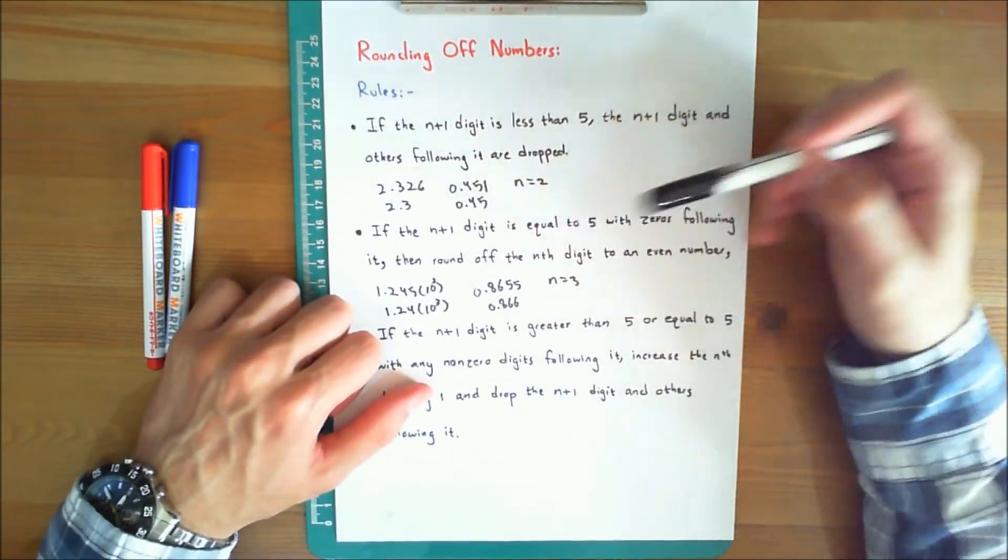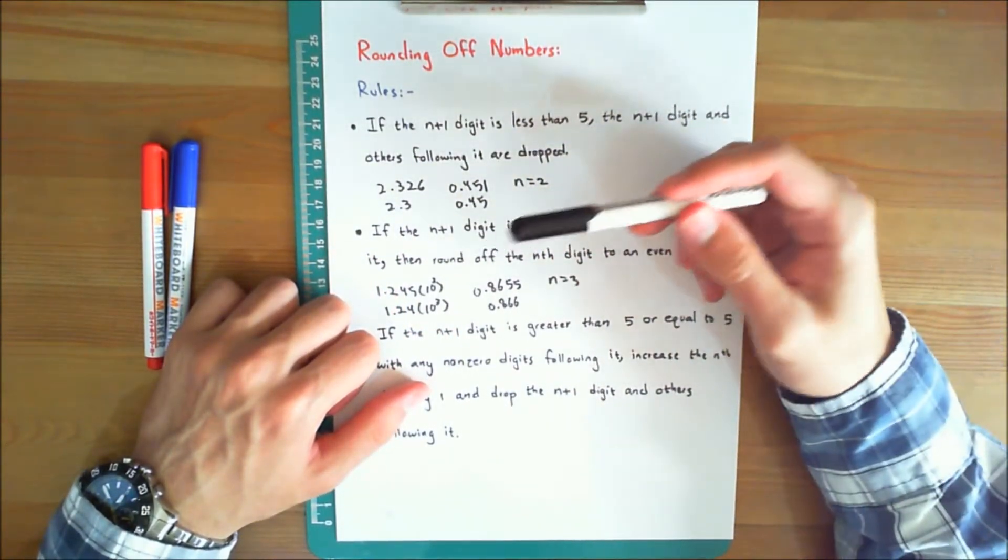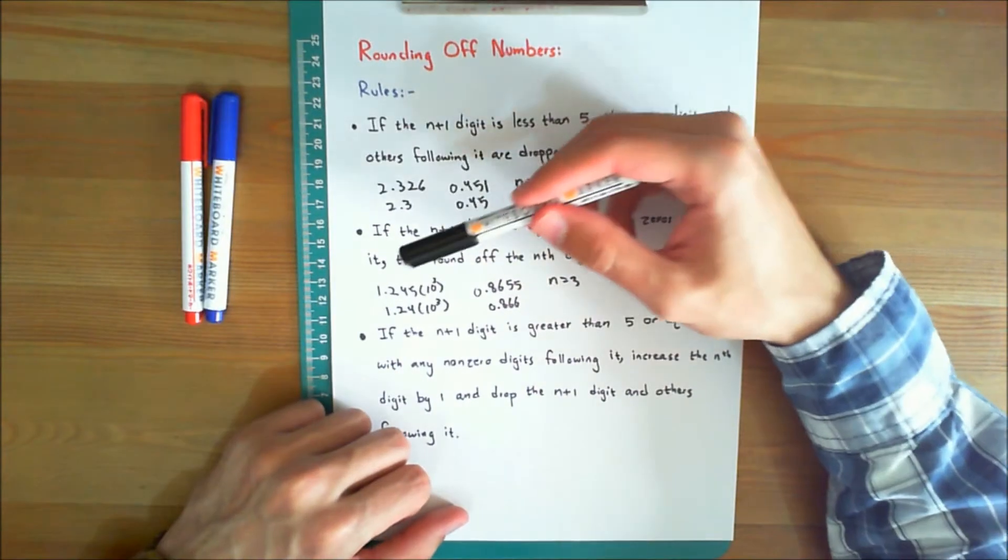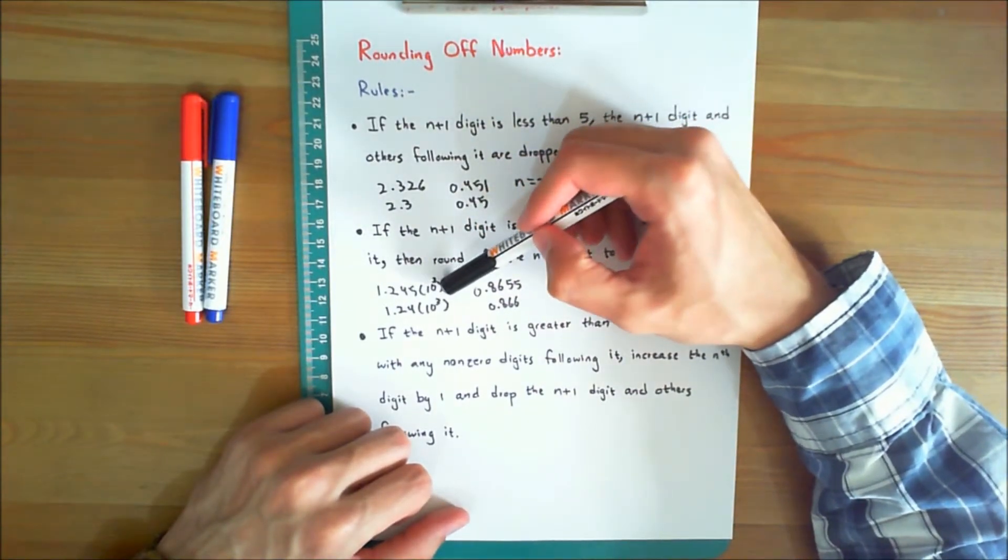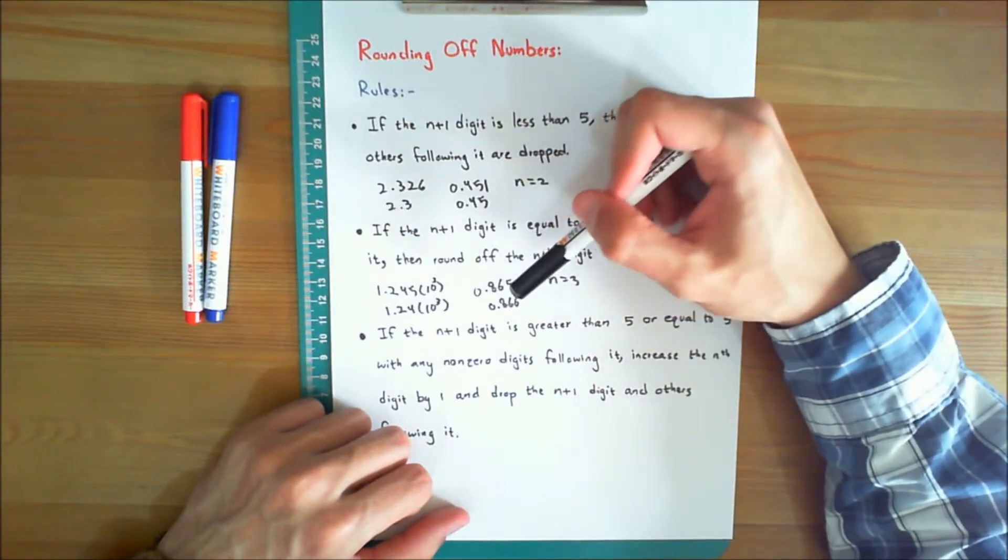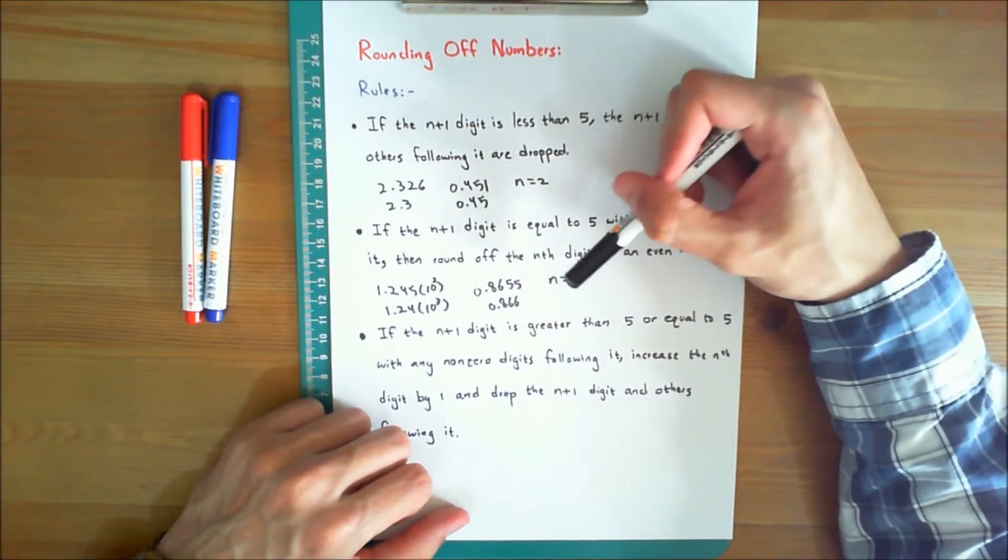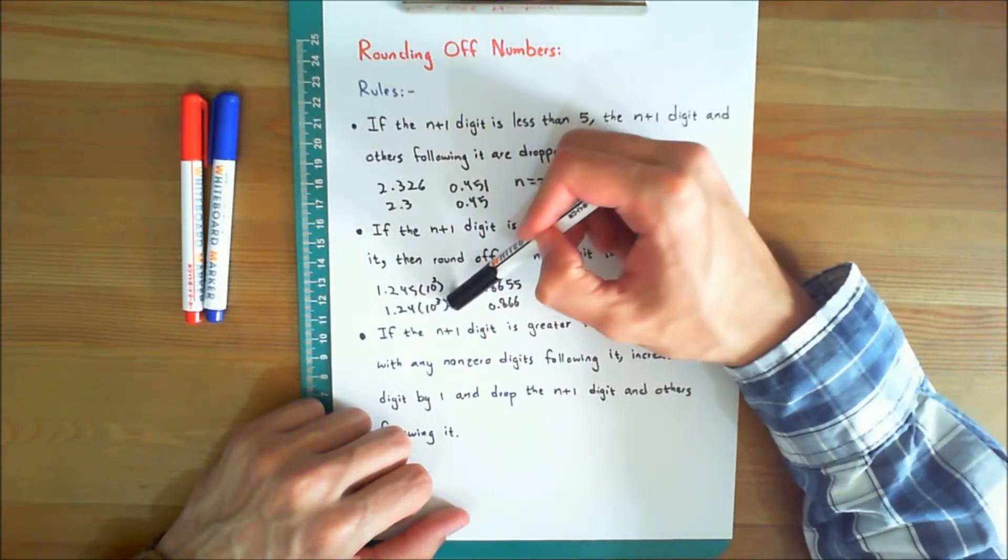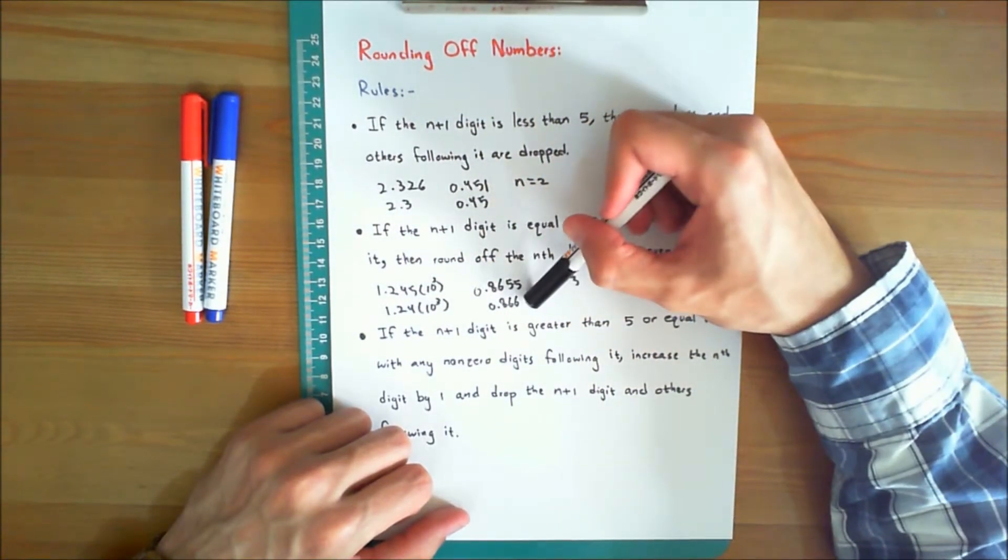If the n plus 1 digit is equal to 5, with 0s following it, then round off the nth digit to an even number. For example, 1.245 times 10 to the power 3 and 0.8655 both rounded off to n equals 3 significant figures would give you 1.24 times 10 to the power 3 and 0.866.